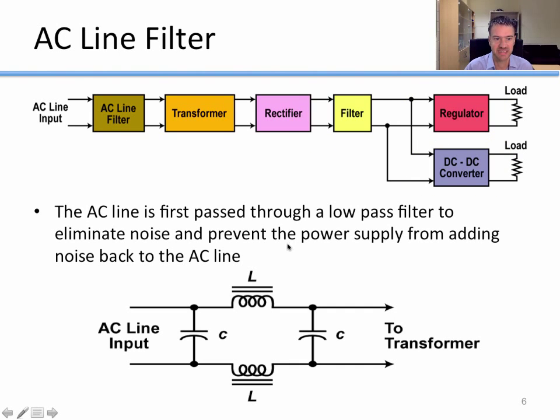First is the AC line filter. The AC line filter is a low-pass filter used to remove noise and prevent the power supply from sending noise back to the AC line.